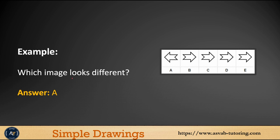You could see this picture — which image looks different? You could see all the arrows go from left to right, but in letter A, it goes from right to left. So the correct answer is letter A.